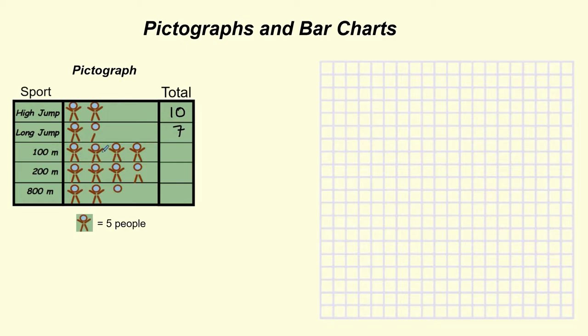Onto the hundred meters. Again, we've got counting up in five. So five, ten, fifteen, twenty. And they're all full stick people. So twenty.